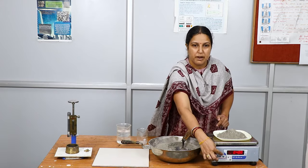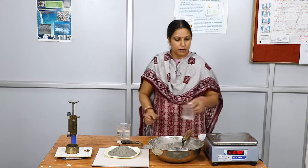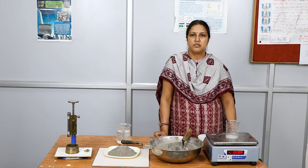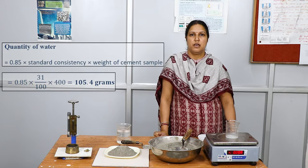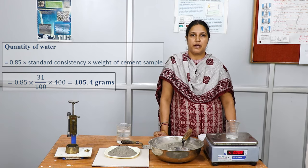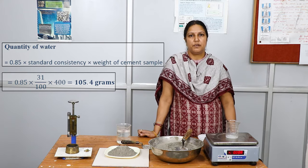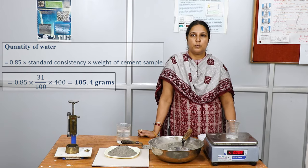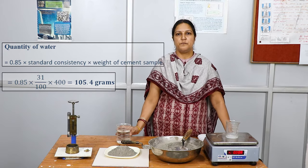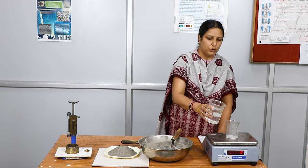We have taken 400 grams of cement. The water to be added for initial and final setting time is 85 percent of standard consistency. Suppose the standard consistency is 31 percent, so the water quantity is 0.85 multiplied by 0.31 multiplied by 400 grams, which gives a water quantity of 105.4 grams.